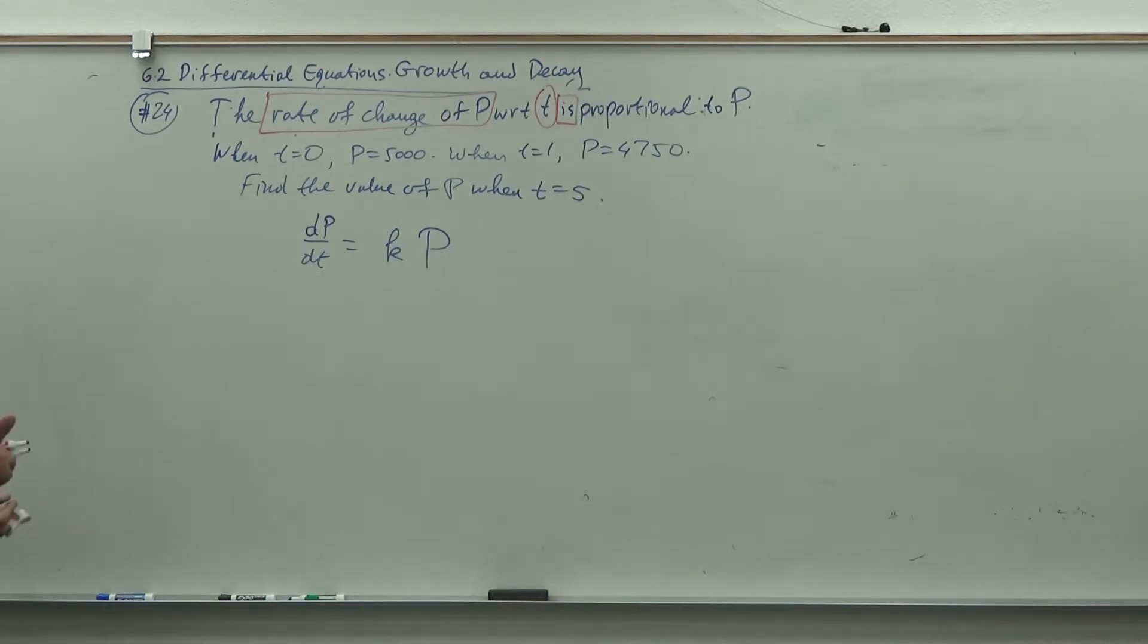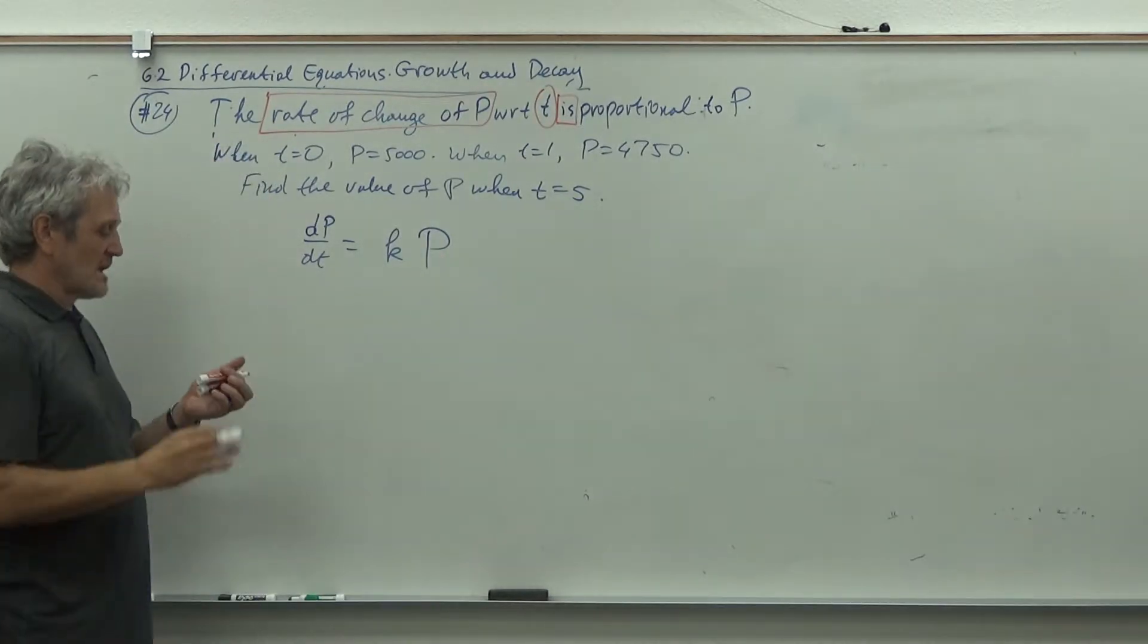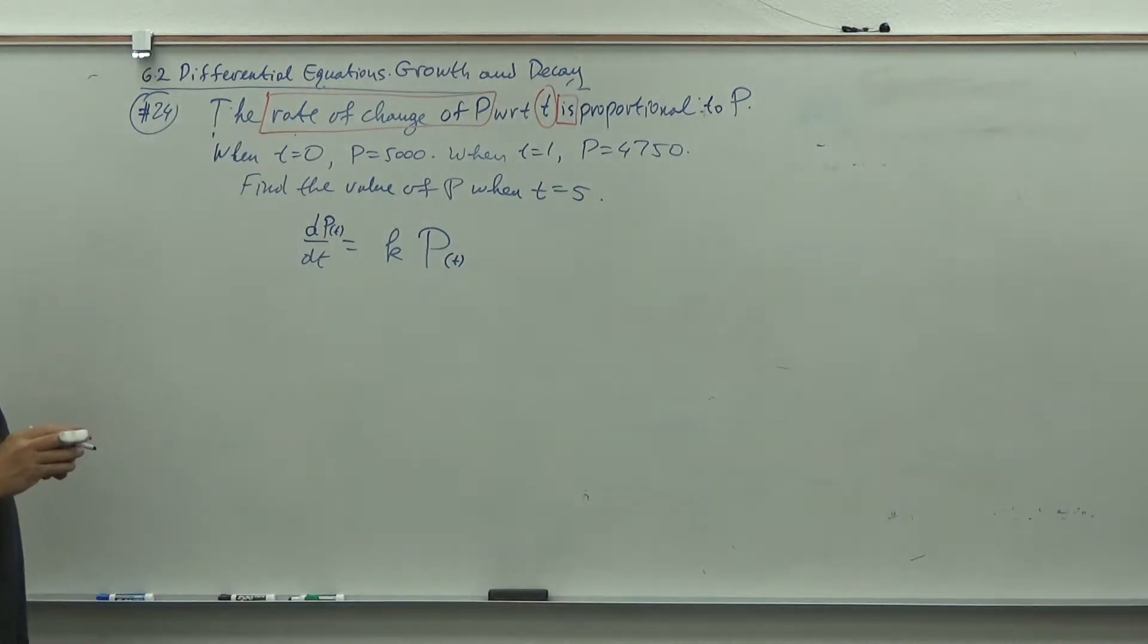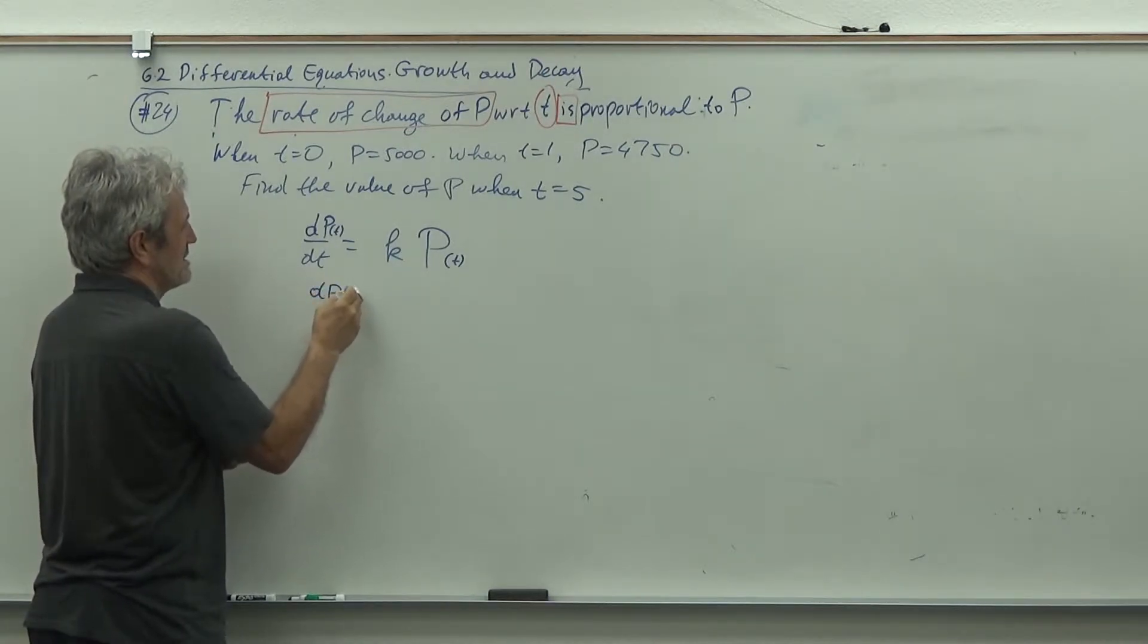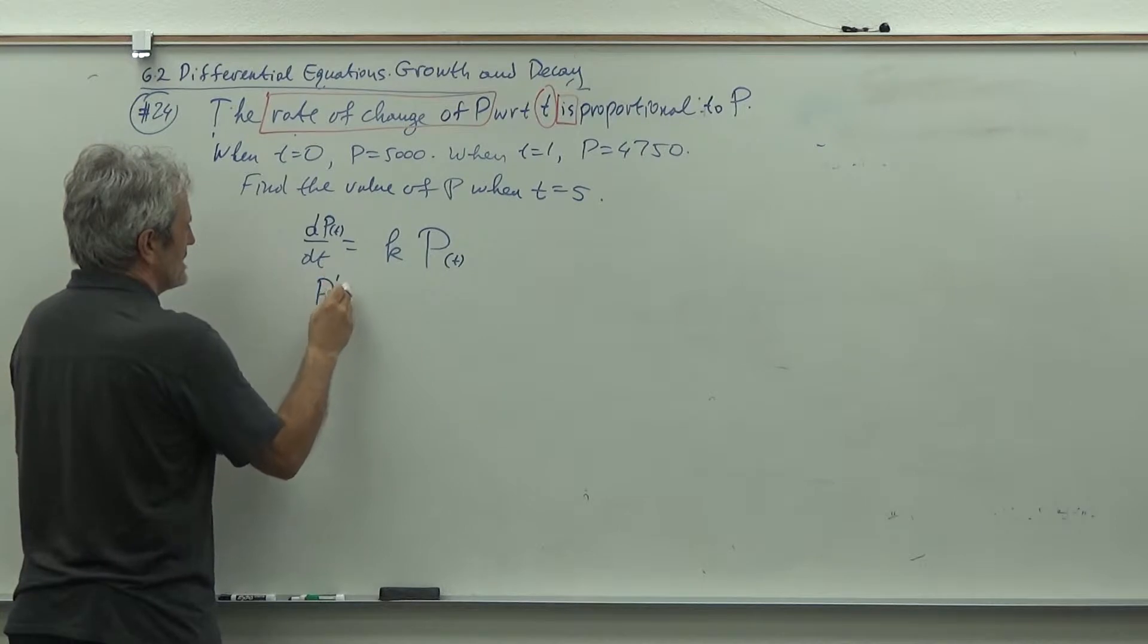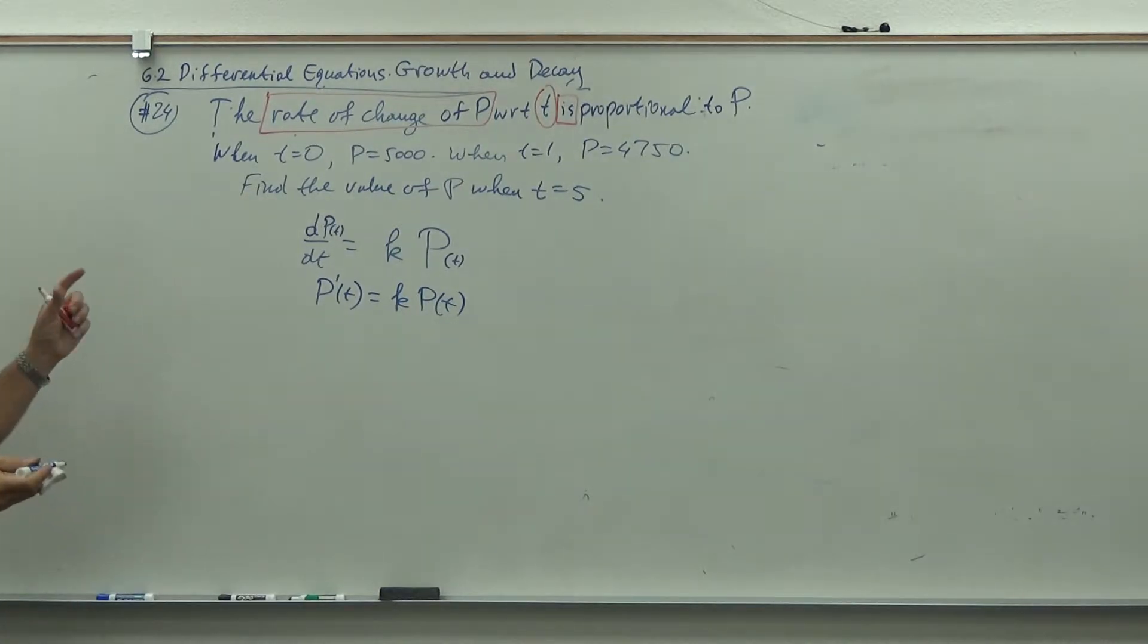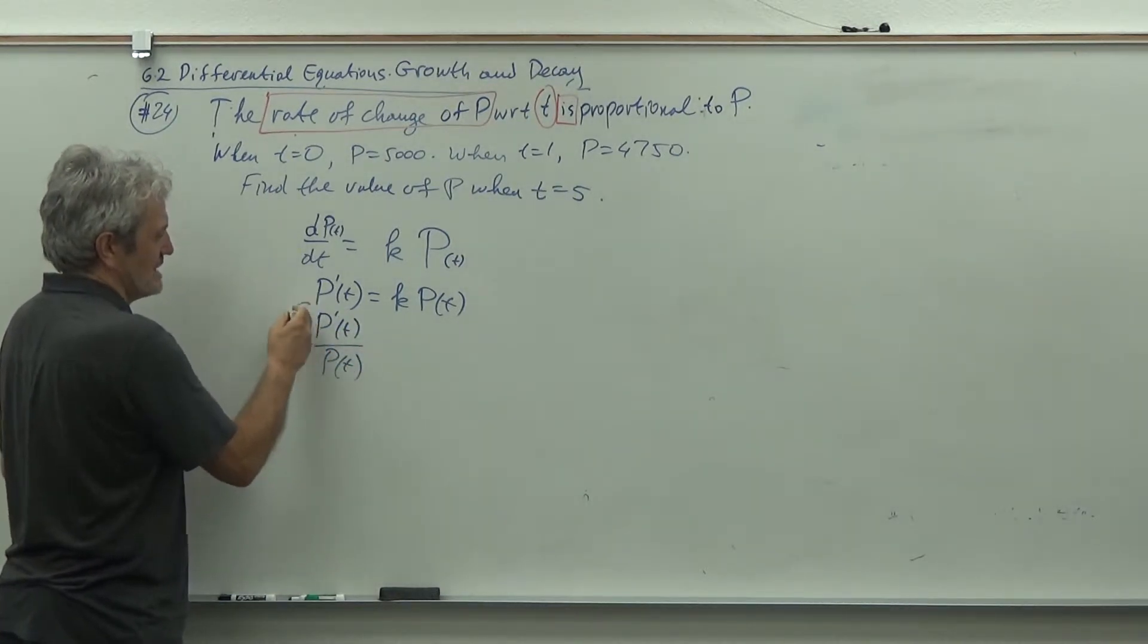Let's write that. Rate of change of P, that's the derivative, is proportional to P times constant k. Now we cannot integrate the same way as a minute ago because we integrate with T and P is on the wrong side. So what do we do? We do the trick from two problems back: we get P's on one side. So we'll get P prime of T over P of T equals k, and integrate both sides.